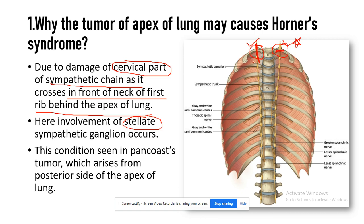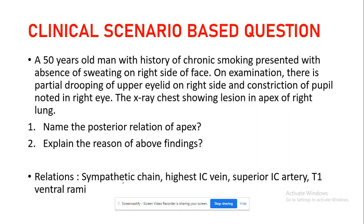Involvement of the stellate sympathetic ganglia occurs, and this compression of the sympathetic ganglia leads to Horner syndrome. This condition is generally seen in the Pancoast tumor, which is a tumor of the apex of the lung arising from the posterior side. A typical clinical scenario: a 50-year-old man presents with a history of chronic smoking and absence of sweating on the right side.